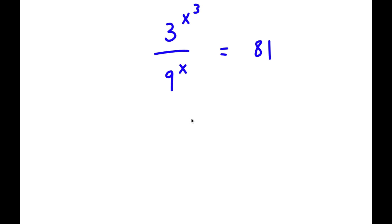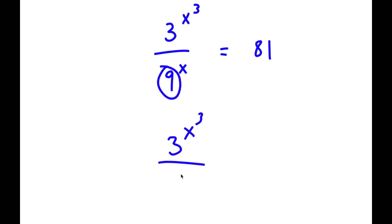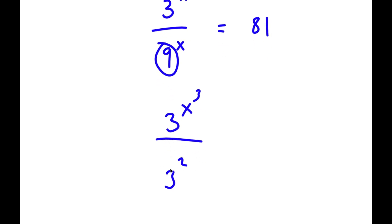So in this problem, I have 3 to the power of x to the power of 3 over 9 to the power of x is equal to 81. The first thing I'm going to do is rewrite 9 as 3 to the power of 2, and rewrite 81 as 3 to the power of 4. So now I have 3 to the power of x to the power of 3 over 3 to the power of 2 to the power of x is equal to 3 to the power of 4.